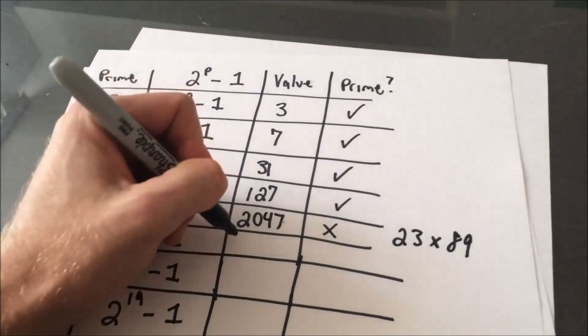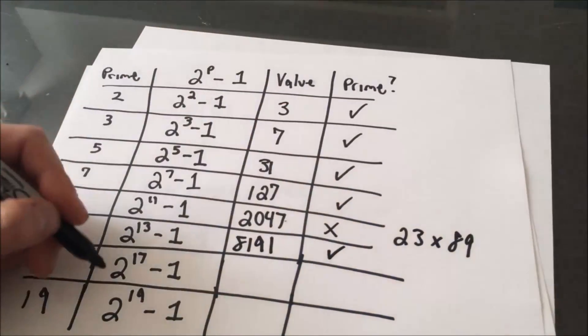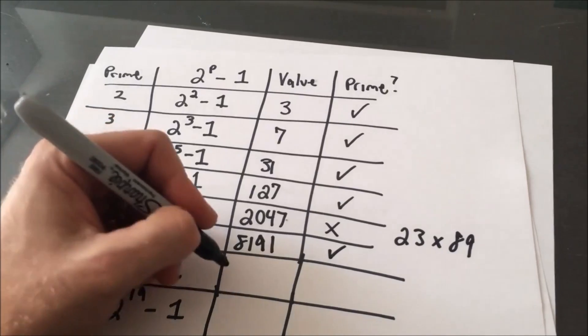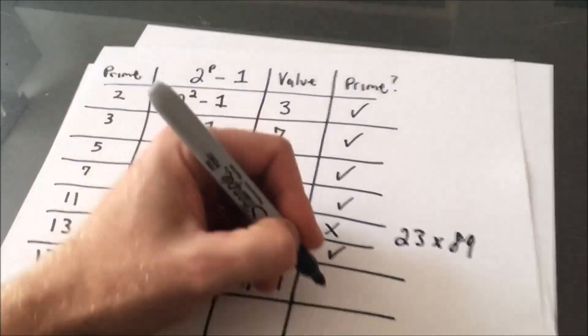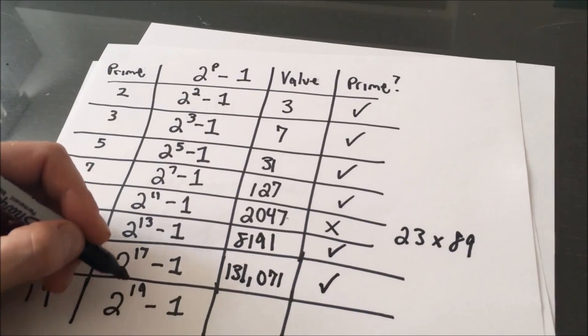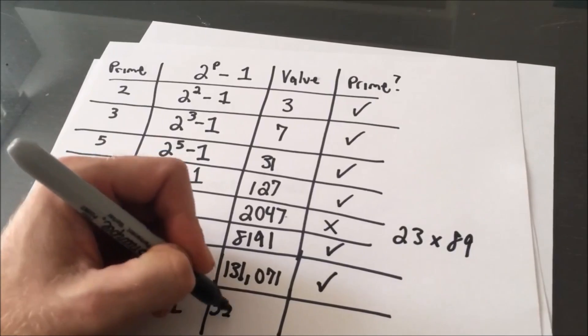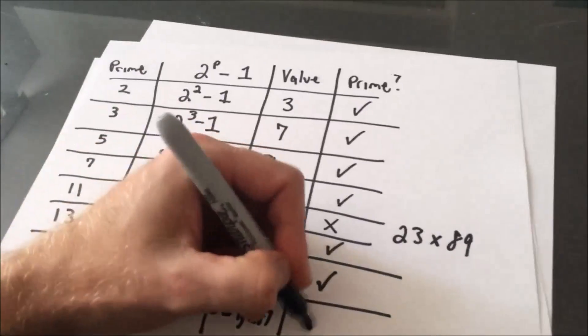2 to the 13th minus 1, that's our number, 8,191. 2 to the 17th minus 1, that's 131,071, that turns out to be a prime number. And 2 to the 19th minus 1 is 524,287, which is also a prime number.